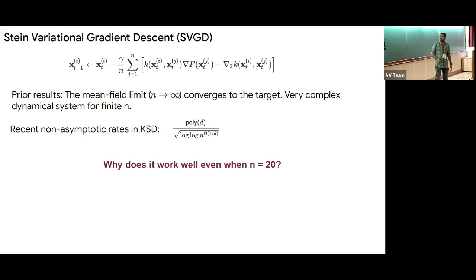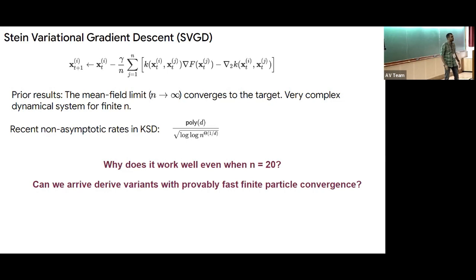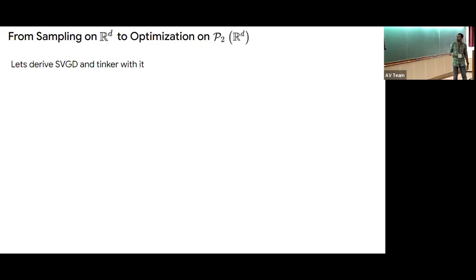The question we ask is: why does SVGD work well when n equals 20? I won't be answering that question as it's very hard, but I will answer a second question: can we arrive at variants that converge provably fast with a finite number of particles? We will massage the equation a bit, change the dynamics slightly, and still converge to a similar mean field limit, but with guarantees polynomial in the ambient dimension d.